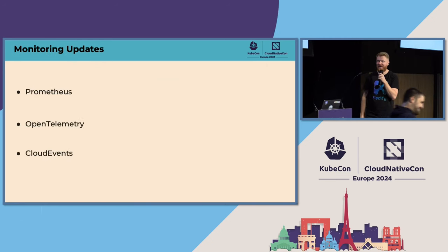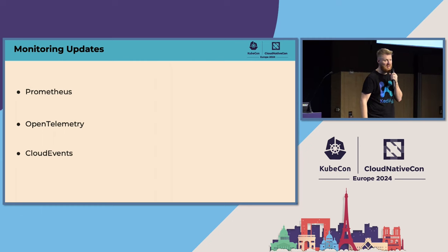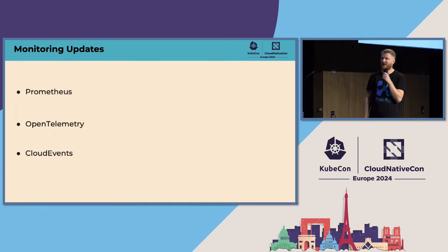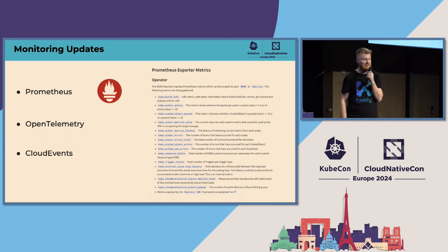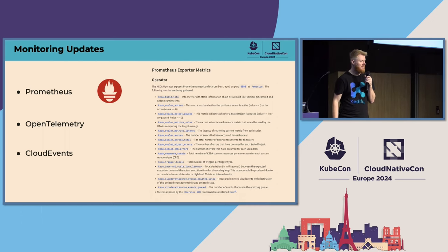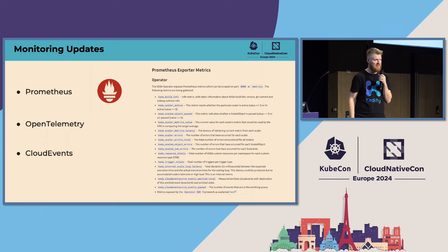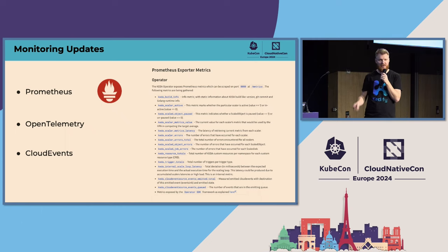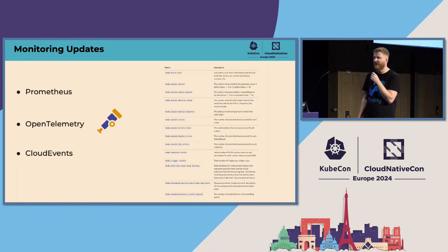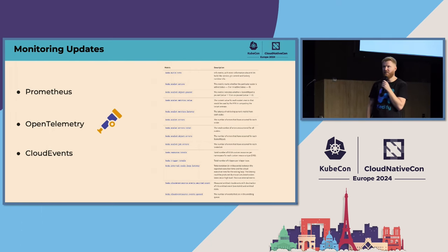In the last couple of months we've been improving the monitoring stack. We expose Prometheus metrics about what's happening under the hood — errors, actual metric values, etc. — because autoscaling is one part, but having knowledge about the system is also important so you can react to errors and adjust settings. We also expose the same metrics through OpenTelemetry so you can use your OpenTelemetry collector to ingest them.